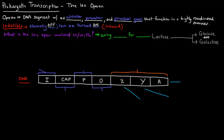Now what is the lac operon even involved in? Why do we care about it at all? Well, this is the way that prokaryotes use lactose for energy. Lactose is a disaccharide made up of glucose and galactose, and bacteria can use this for energy, but they have to break lactose down into glucose and galactose. The enzyme that catalyzes that reaction is called beta-galactosidase.